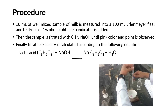Now let's see how to do the acidity test. 10 ml of a well-mixed milk sample is measured into a 100 ml Erlenmeyer flask, and 10 drops of 1% phenolphthalein indicator is added. Then the sample is titrated with 0.1 N sodium hydroxide until a pink color endpoint is observed.